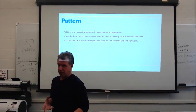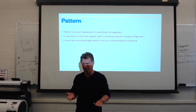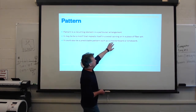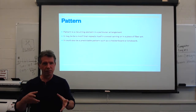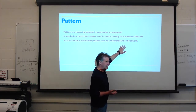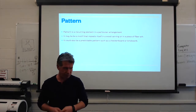Repetition is an element in art that is repeated. I could have four of the same photographs of a person placed in different ways — that photograph is repeating, but it does not create a pattern. A pattern is a recurring element in a particular arrangement. It may be a motif that repeats itself in wood carvings or fiber art. It could be a predictable pattern, such as a checkerboard or brickwork — that's the lowest common denominator of what a pattern is.